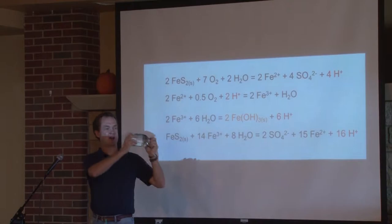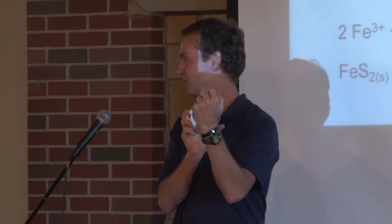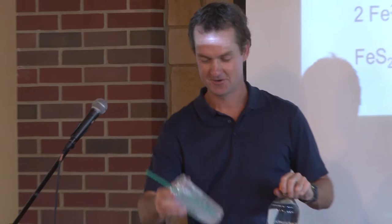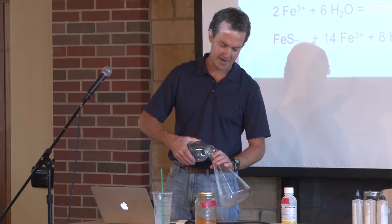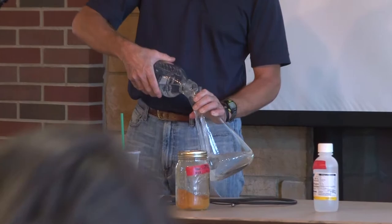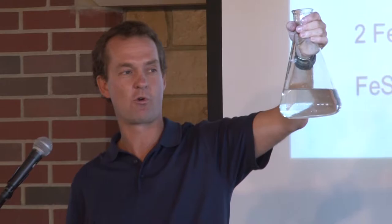This is acid mine drainage — heavily polluted water. It doesn't really look so bad; it looks like something you might get out of the tap. But this is what it looks like coming out of the mine. It's high in sulfuric acid and high in a reduced form of iron called ferrous iron. We have lots of mine seeps throughout the region where this is just pouring out 24 hours a day at very large flow rates.